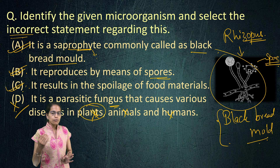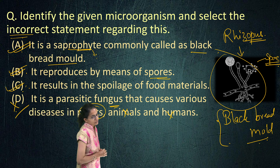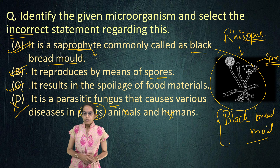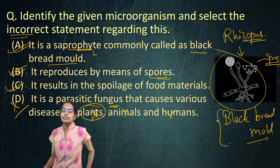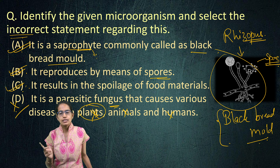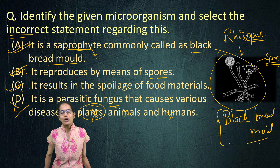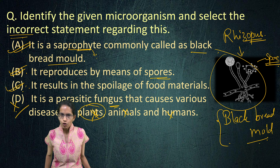A detailed understanding of fungi and its classification has been covered in our five kingdom classification of class 9. Don't miss that, because when preparing for NSO Level 2, it is expected that you are preparing one level up — one class above what you are currently studying. Make sure you cover those topics carefully before you attempt your paper. Wish you very good luck and do follow the link below for more similar questions and practice material.